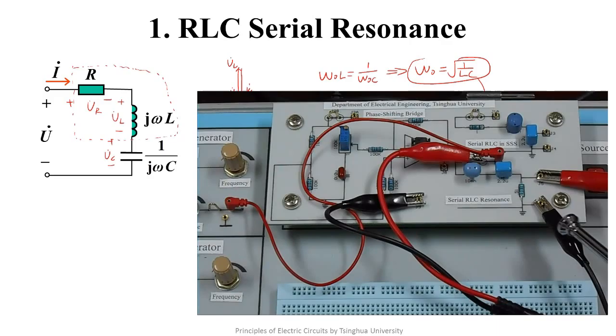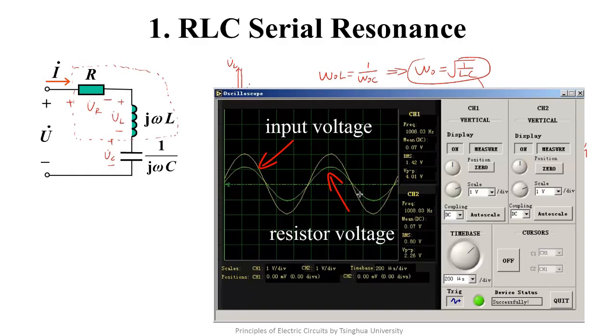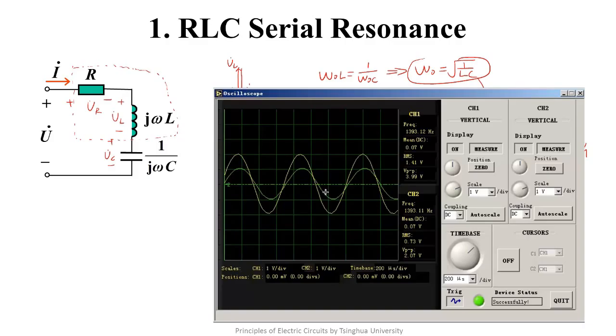Next, we'll see experiment of the RLC serial resonance. This is the serial RLC circuit. The input is the sinusoidal signal on board. The output is the voltage of the resistor, which is proportional to the current. We can change the frequency of the input signal to observe the resonance of the circuit.